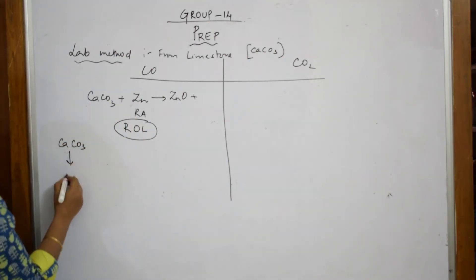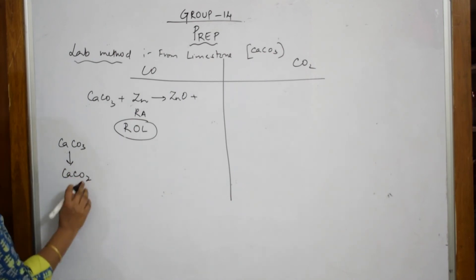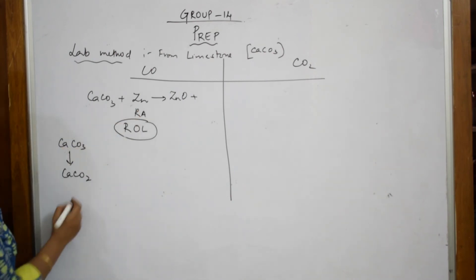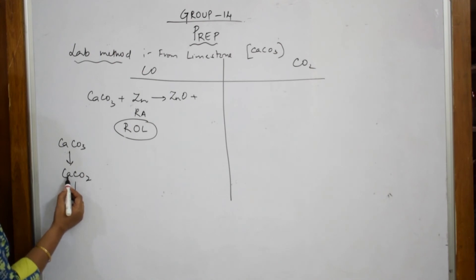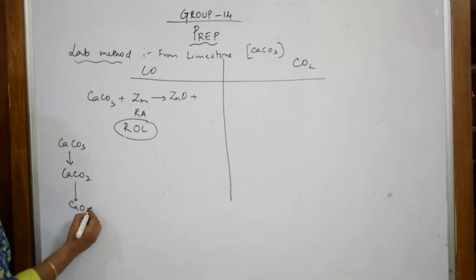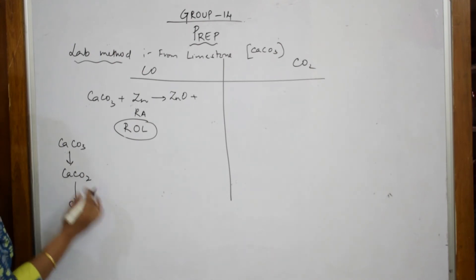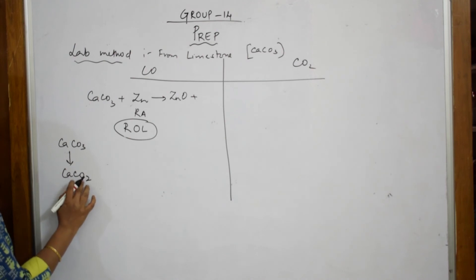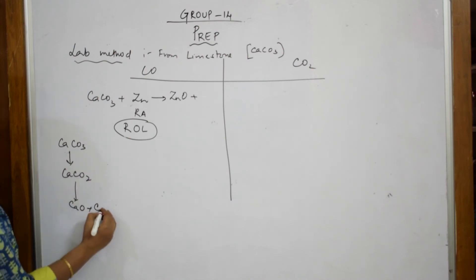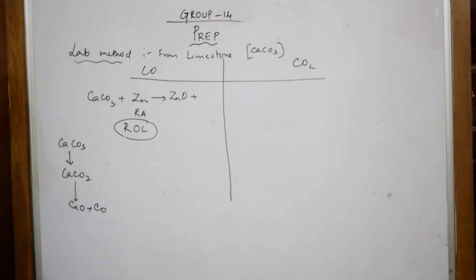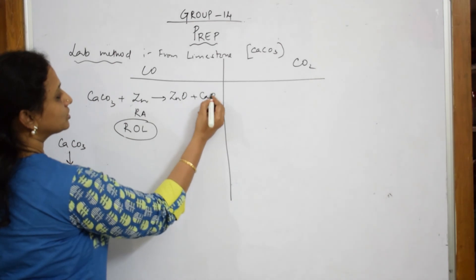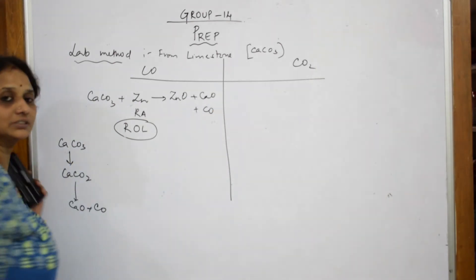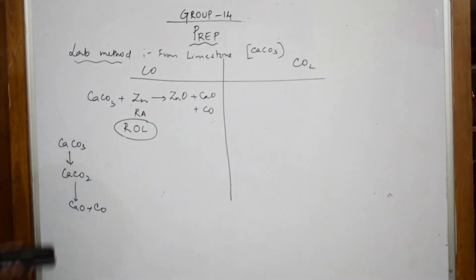CaCO2 — it has become CaCO2 because one oxygen has gone. If this further dissociates, just observe carefully: calcium oxide, one oxygen is gone. After calcium oxide, what else is left? Carbon monoxide — simple. So what do I get now? Calcium oxide plus carbon monoxide — simple as that.